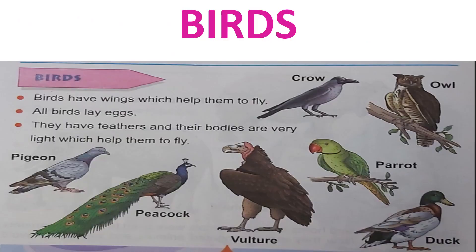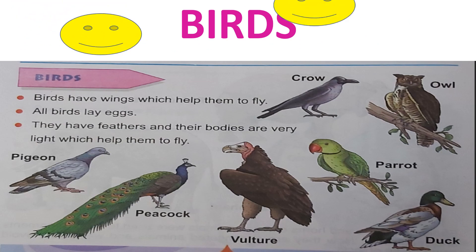Now children, take out your textbook page number 68. Today we are going to learn about birds. Put your finger there and first try. Birds have wings which help them to fly. All birds lay eggs and they have feathers, and their bodies are very light which help them to fly.